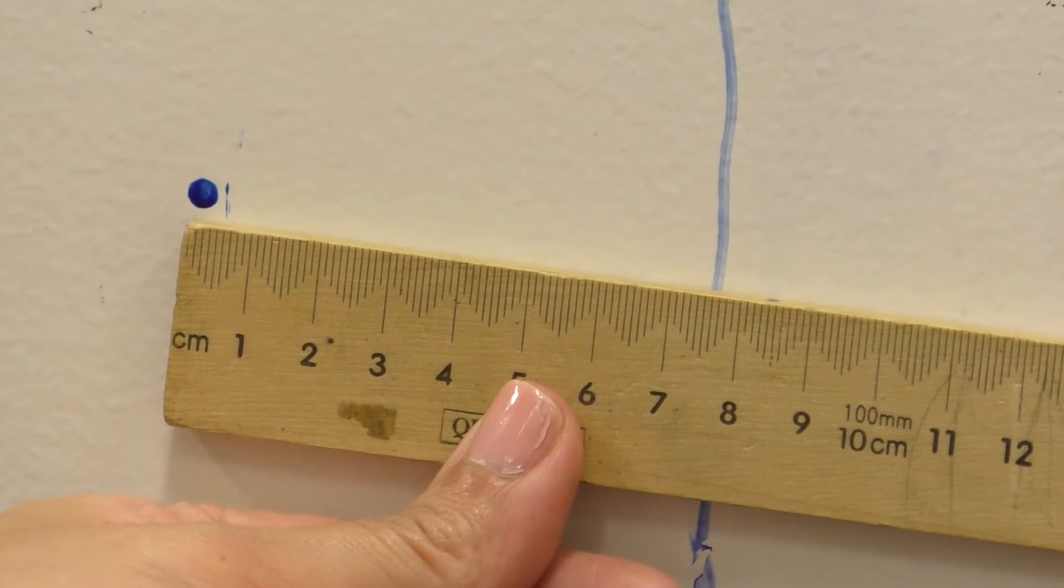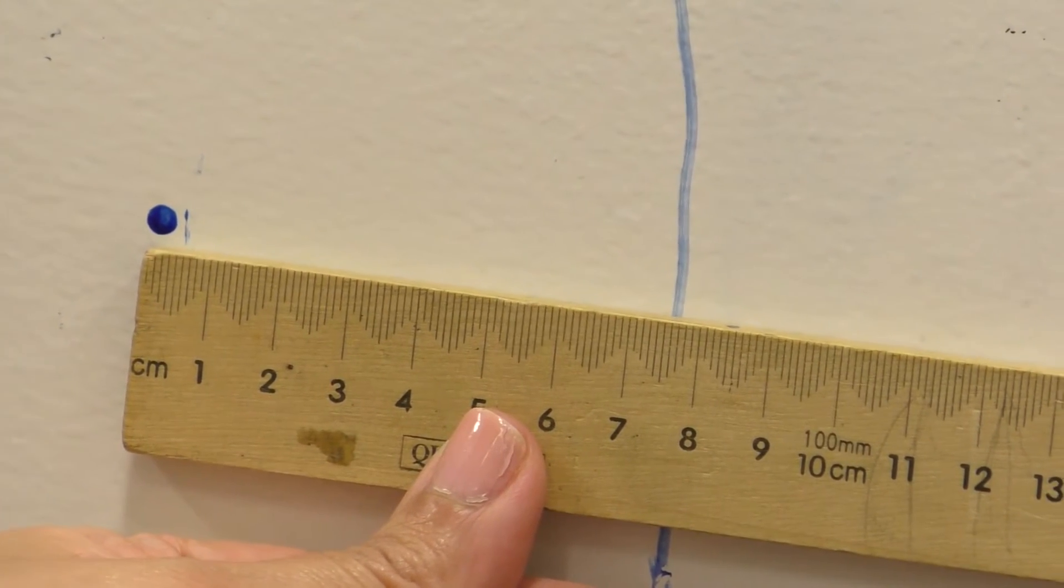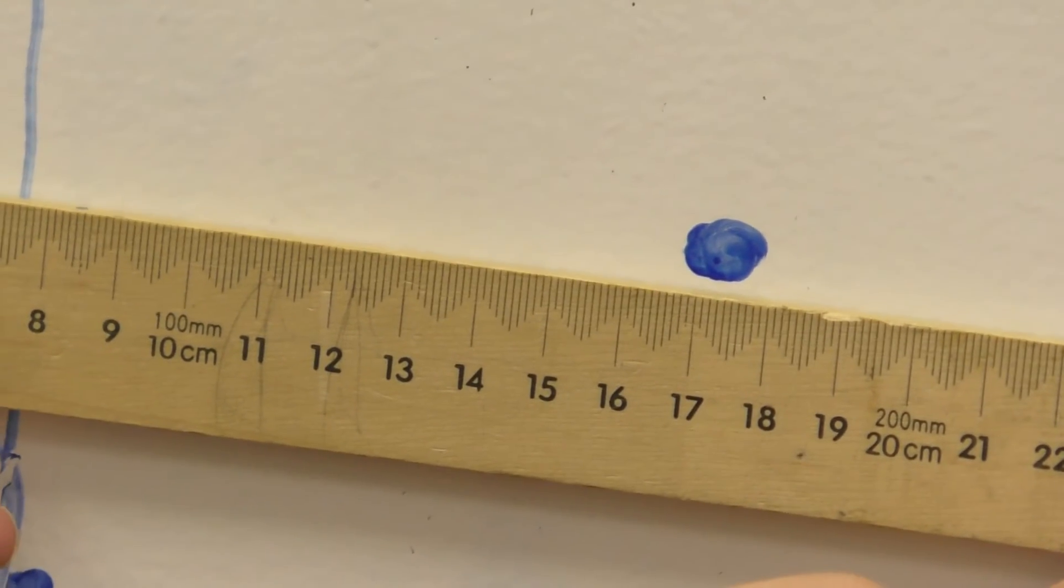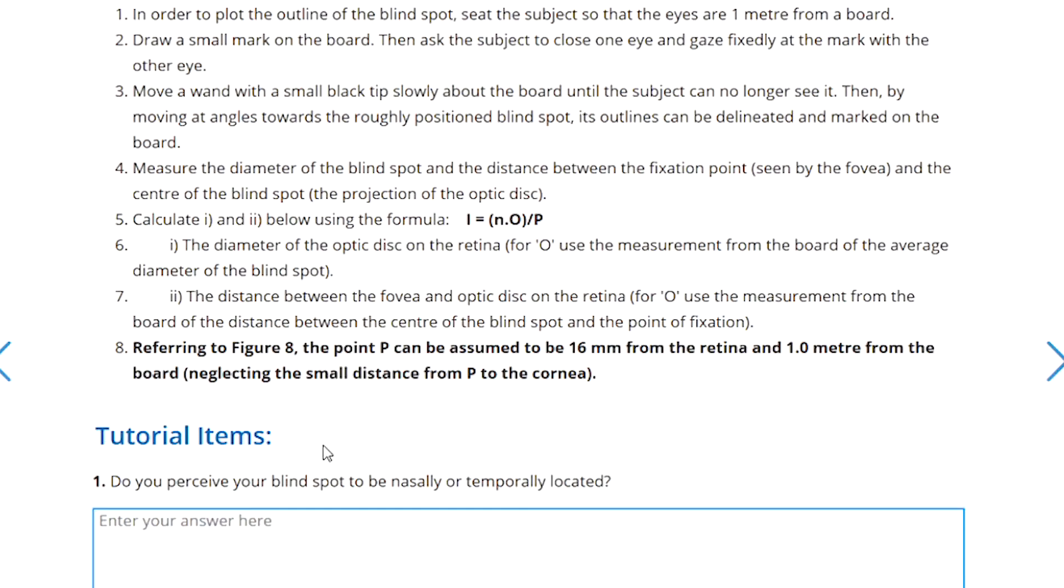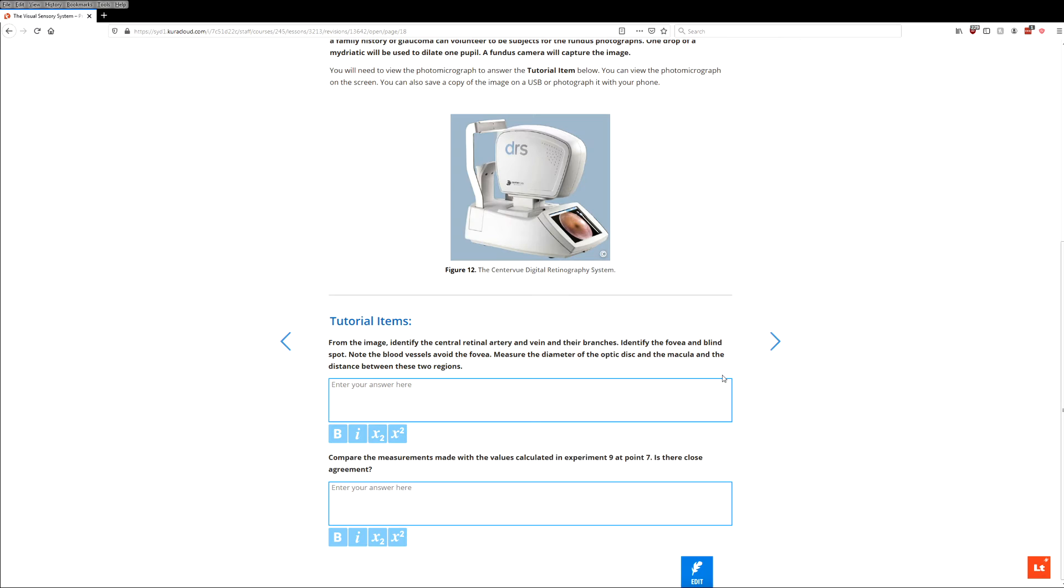Now that we've measured the distances on the wall of the map that we've created of our blind spot and our focal point, we can then use the formula given in your notes in order to calculate the diameter of the optic disc on the retina and also to calculate the distance between the fovea and the optic disc on the retina.